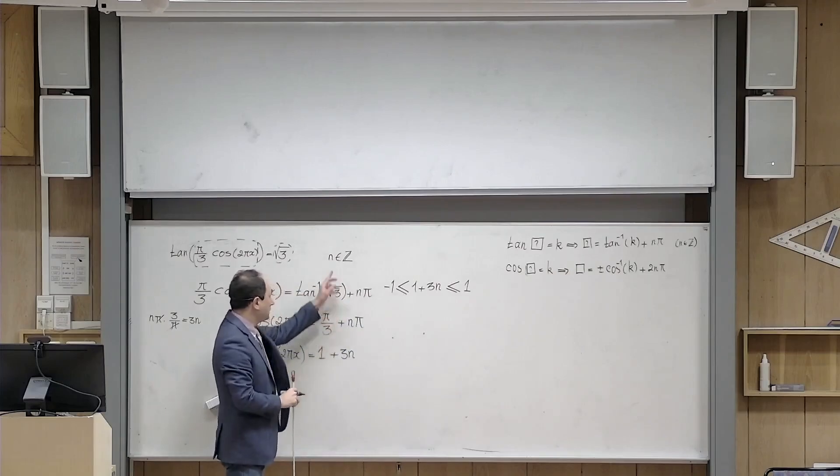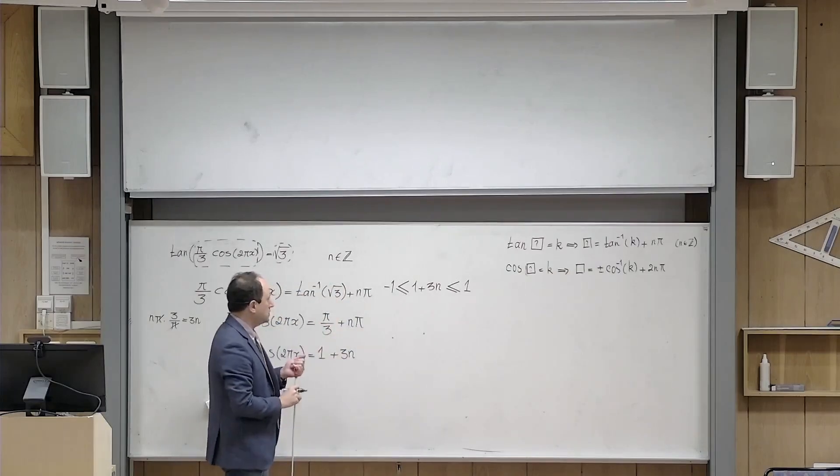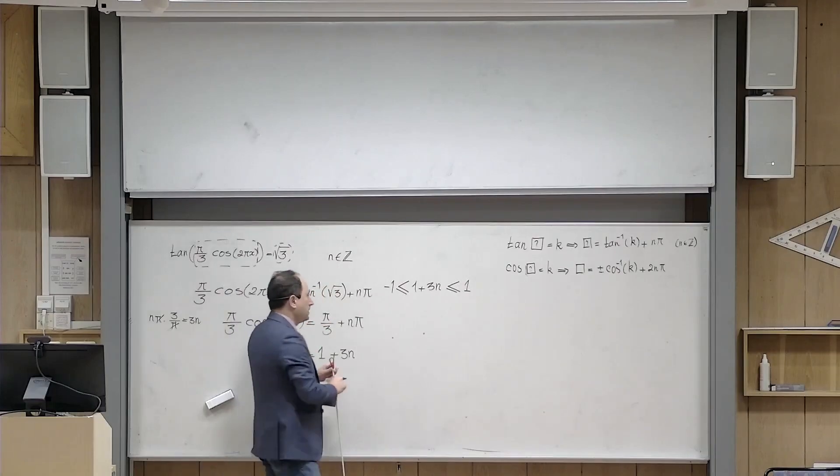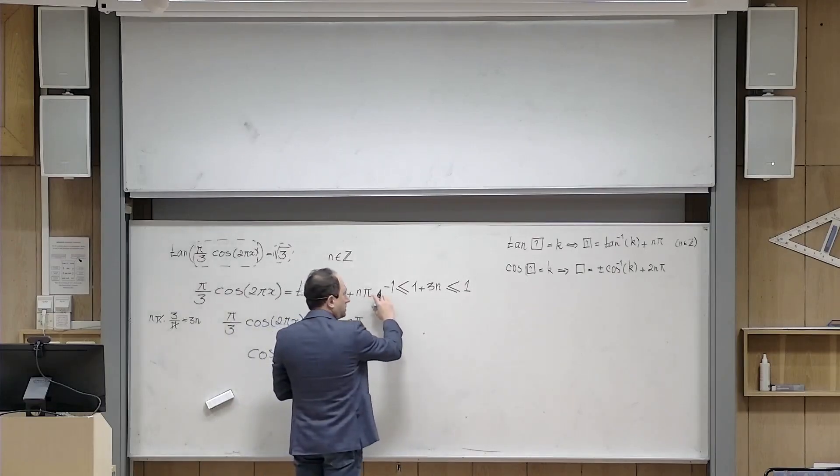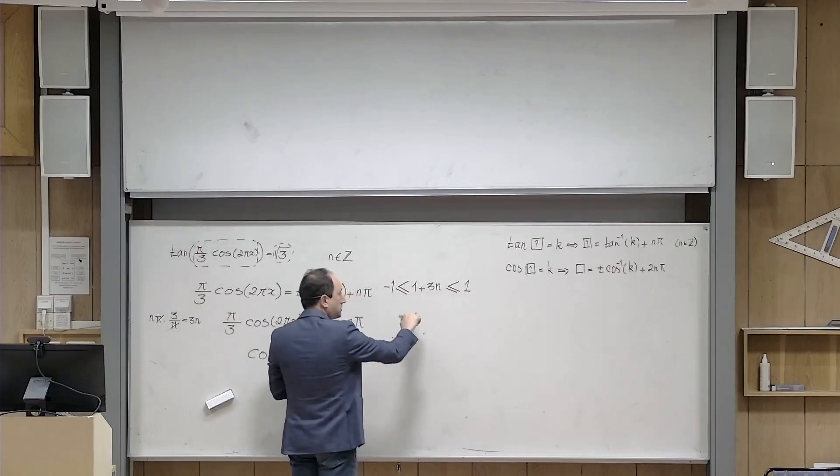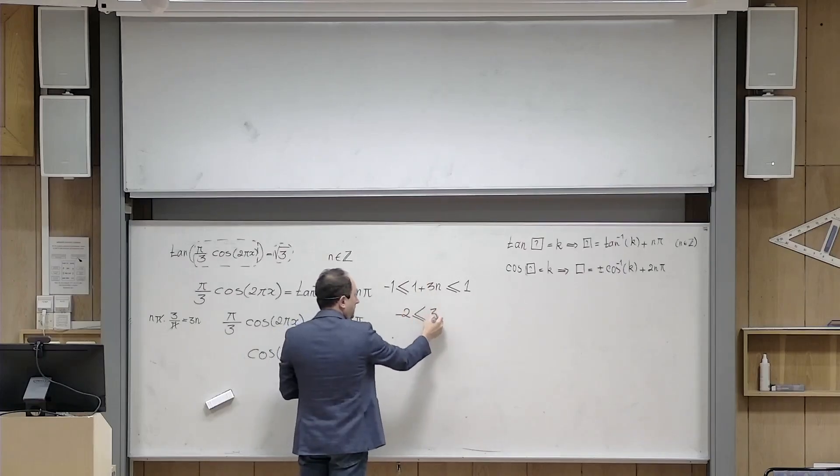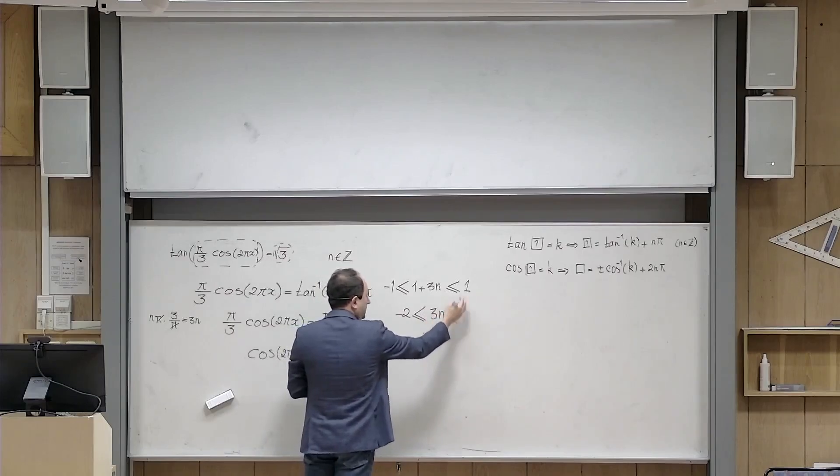This means that in order to have a solution for this equation, this 1 plus 3 n should be maximally 1 and minimally minus 1. On the other hand, we know that n is an integer. So let us see how many of these numbers are acceptable. I add minus 1 to all sides of these inequalities. This becomes minus 2 less than or equal to 3 n.